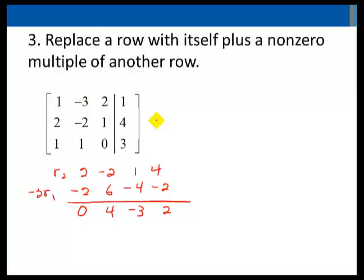And my new matrix now has a row 2 of 0, 4, negative 3, and 2.